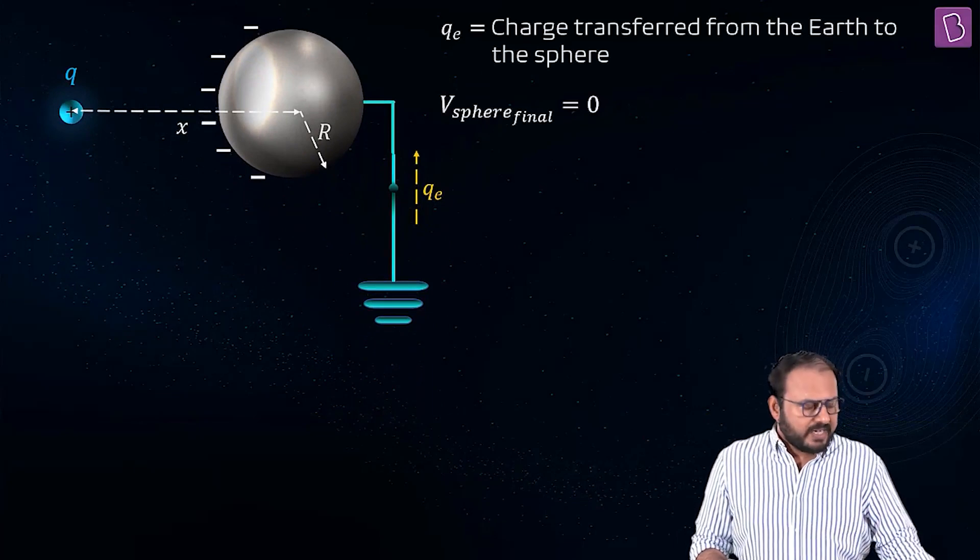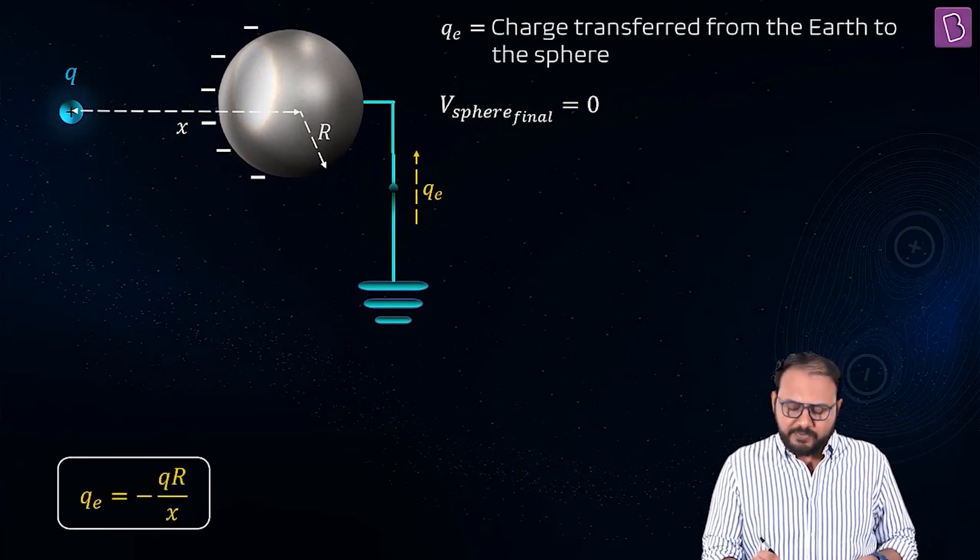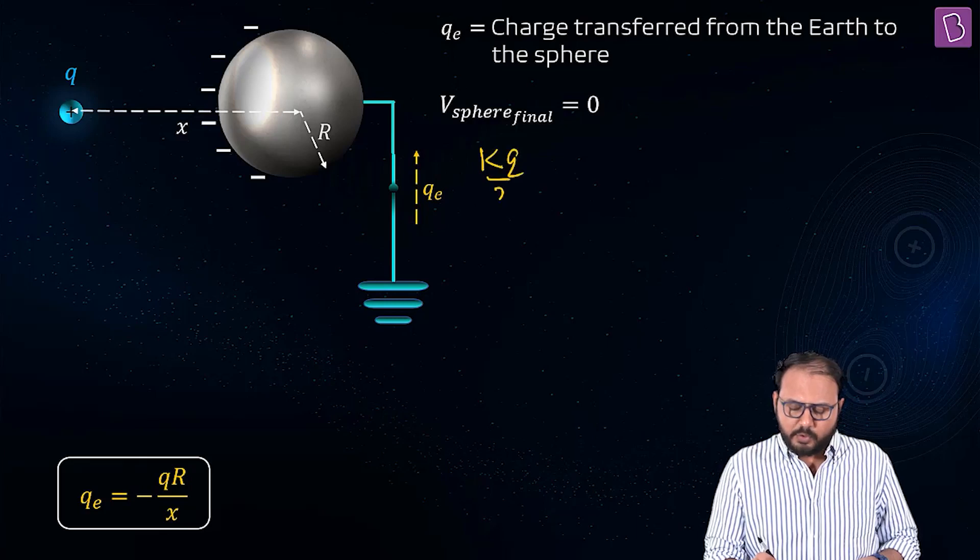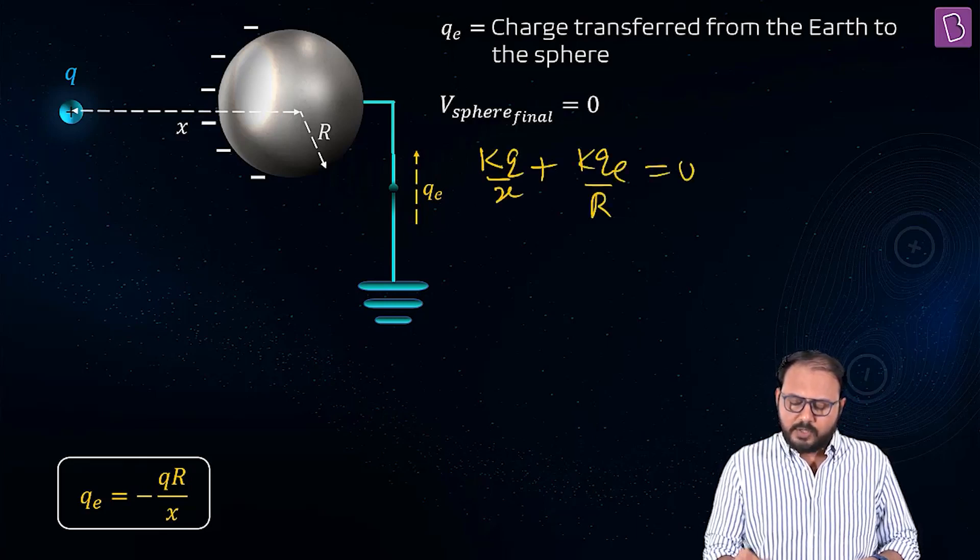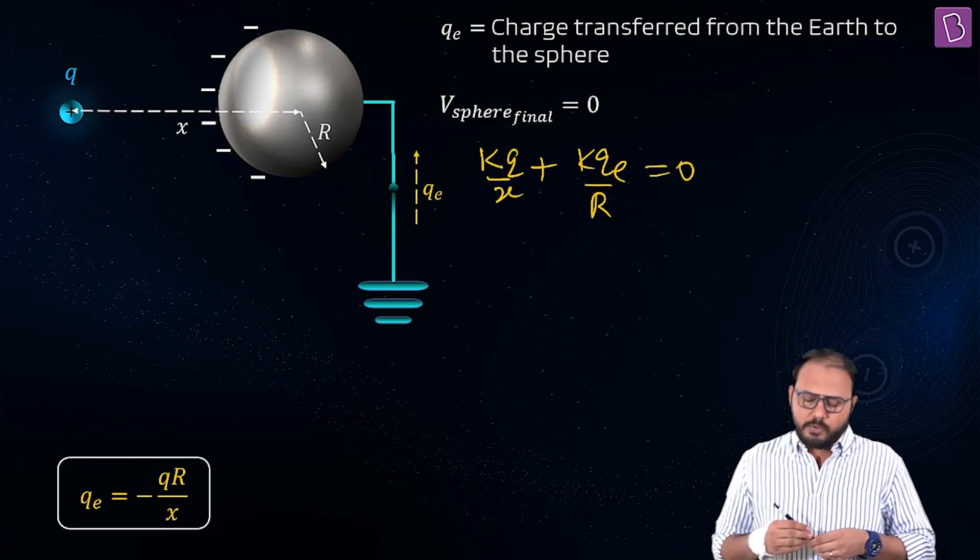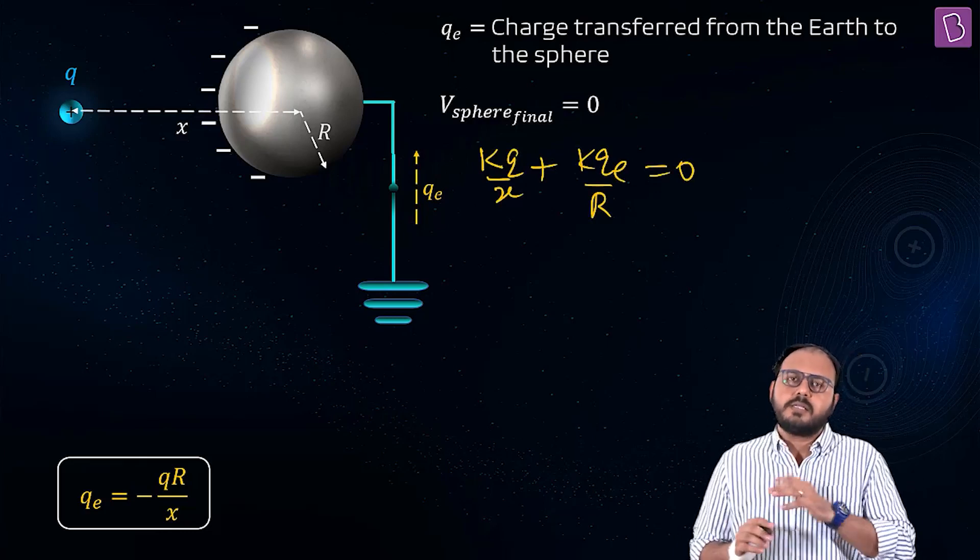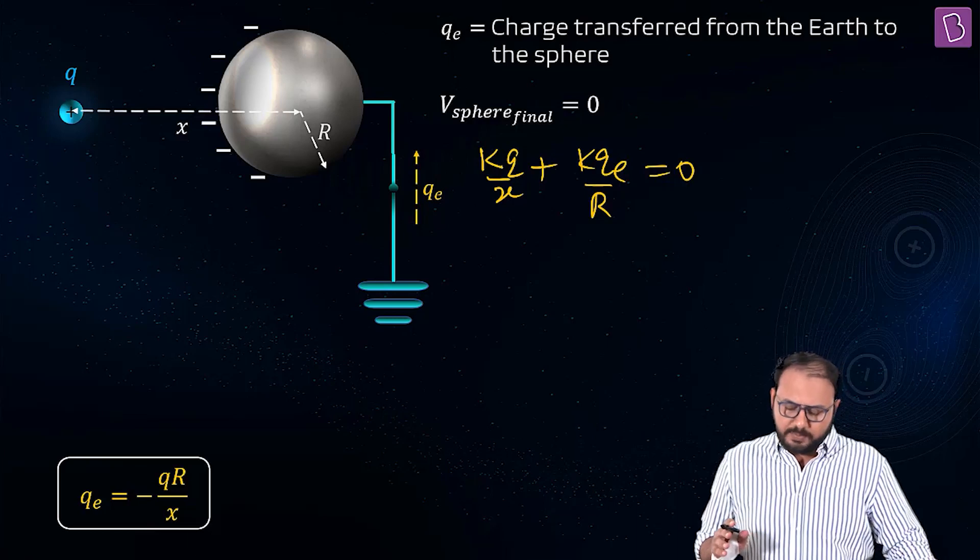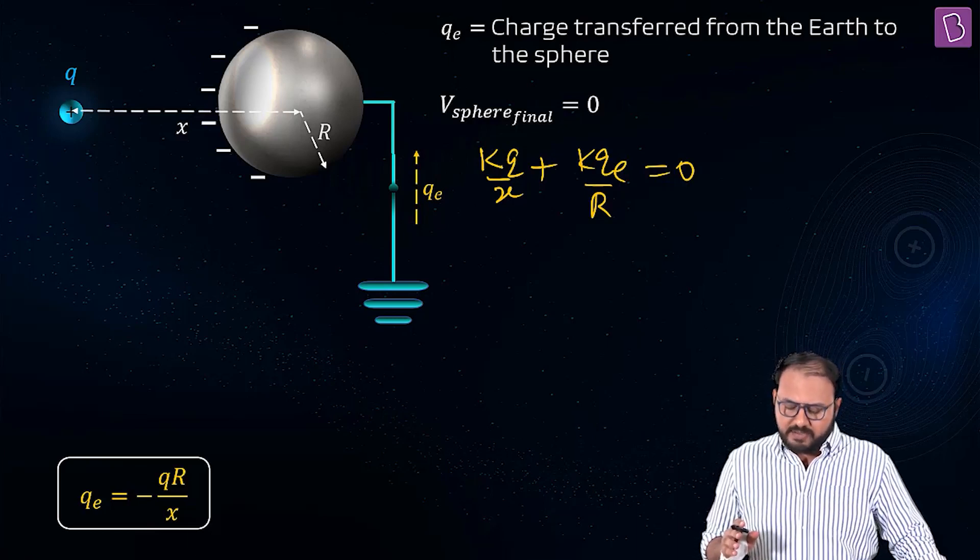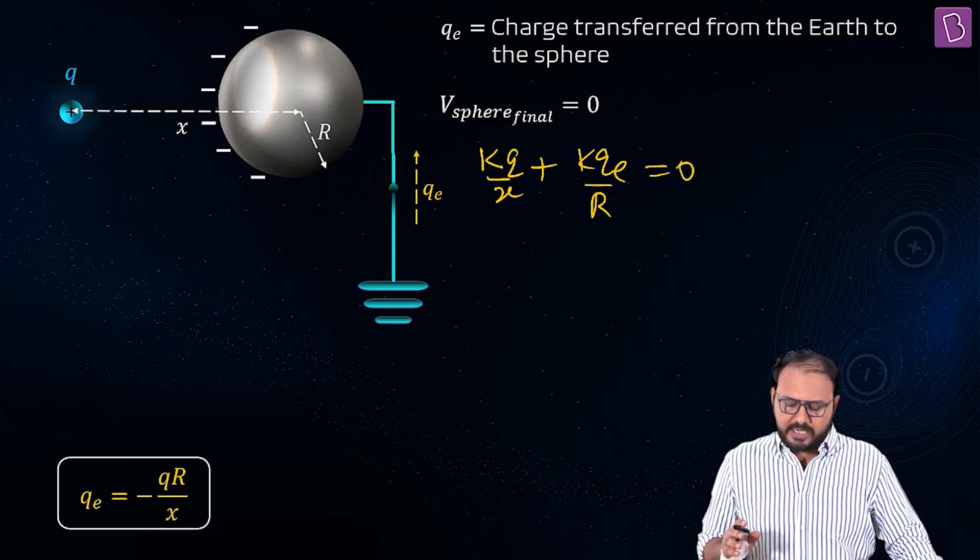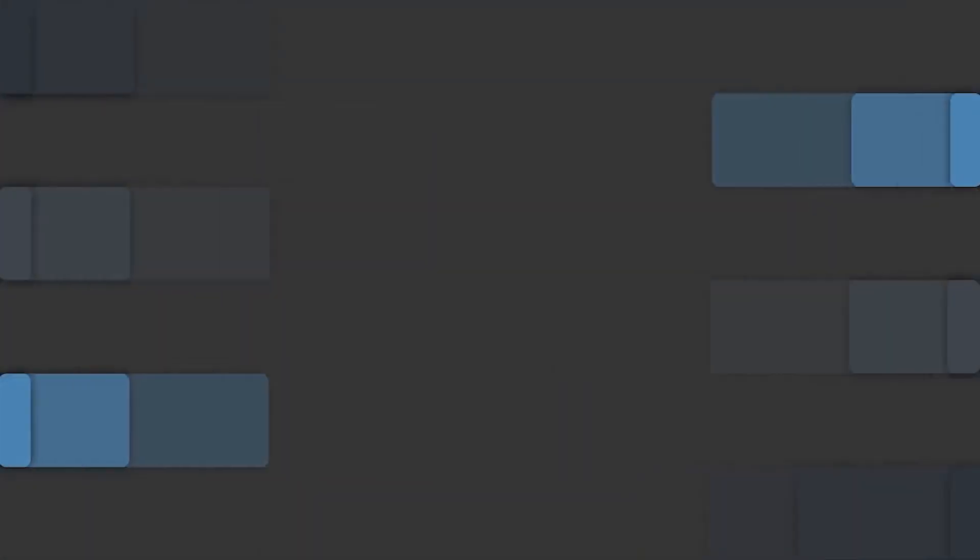V sphere final is zero. And in order to make V sphere final zero, you have k Q by x plus k qe by r equal to zero, which gives you qe equal to minus Q r by x. That's it, finished. That's how you get minus Q r by x.